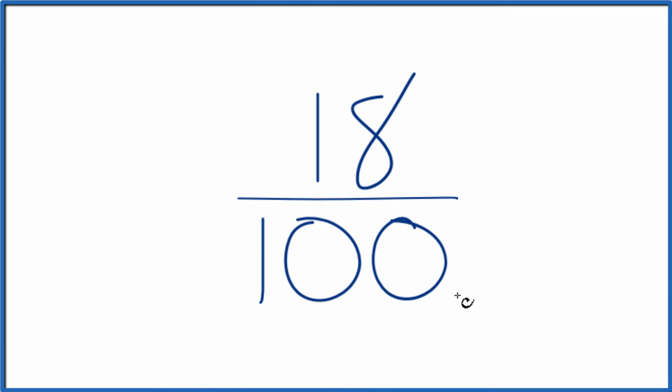What we want to do is find another fraction that's equivalent to 18 divided by 100. It has the same decimal value, it's just that it's in lowest terms. We've simplified it.